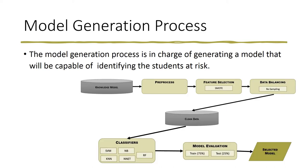The first module is the model generation one. It is in charge of generating a model that will be capable of identifying the students at risk. It takes the information from the knowledge model, pre-processes it, selects the variables to be used, and balances the data. With this clean data, it tests and evaluates different classification algorithms and selects a model for the course.